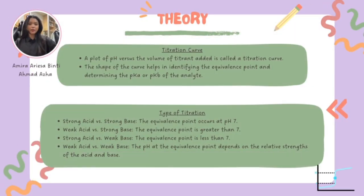A titration curve is a plot of pH versus the volume of titrant added, providing crucial information about the titration process. As we add the titrant to the analyte, we record the pH at regular intervals, and these data points are plotted to create the titration curve. Titration curves are essential for identifying the equivalence point and determining important properties like pKa or pKb. They provide a visual representation of the titration process, making it easier to understand and analyse.